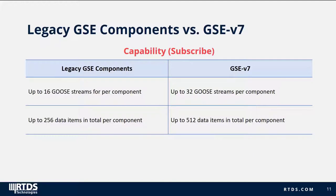When considering subscribing capabilities, the legacy GSE component can subscribe to up to 16 GOOSE streams per component, whereas GSE V7 can subscribe to up to 32 GOOSE streams per component. Similarly, the legacy GSE component can subscribe to up to 256 data items in total per component, whereas GSE V7 can subscribe to up to 512 data items in total per component.